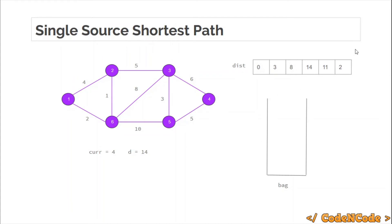This is our final result. Distance of node 1 from node 1 is 0, distance of node 2 is 3, distance of node 3 is 8, distance of node 4 is 14, distance of node 5 is 11, and distance of node 6 is 2. So this is the final result.